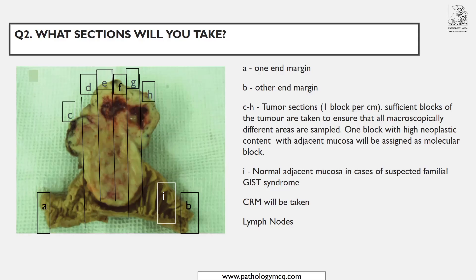For the GIST, remember that for gastroesophageal tumors it is a minimum of four to five sections, but for GIST — being a mesenchymal, hard tumor — you give tumor sections at one block per centimeter. Make sure you have taken all samples with variegated appearance; here you can see hemorrhagic areas and necrotic areas, so those should also be covered.